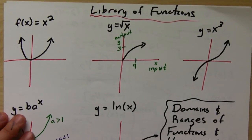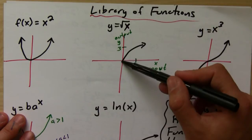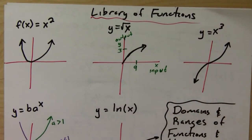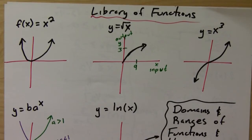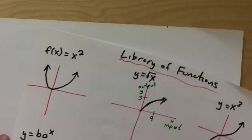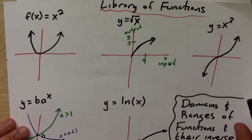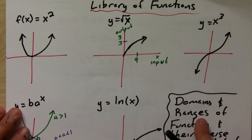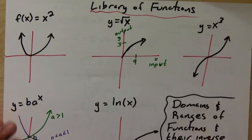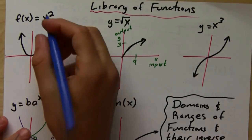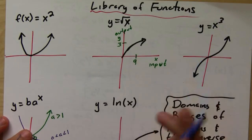Basically, if you know the domain of a function, then you know the range of its inverse, and vice versa. Not every function has an inverse. The requirement for a function to have an inverse is that every output is only allowed to correspond to one input.